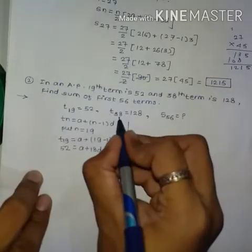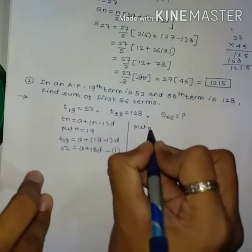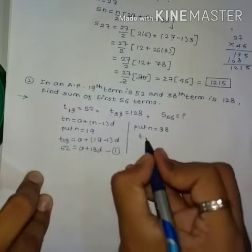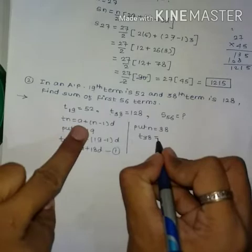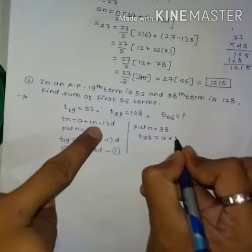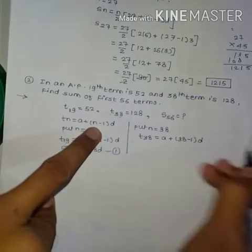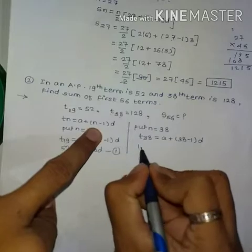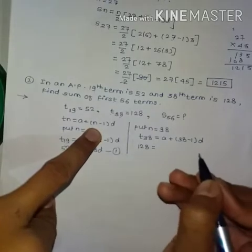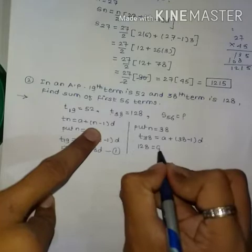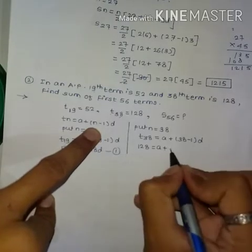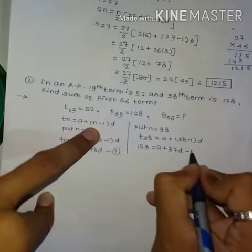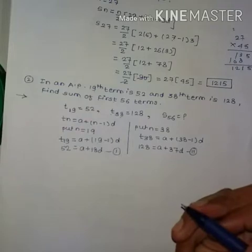Now put n = 38: t38 = a + (38−1)d = a + 37d = 128. This is equation number 2. In this type of question, instead of subtracting, we simply add both equations.